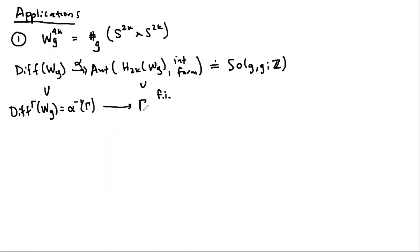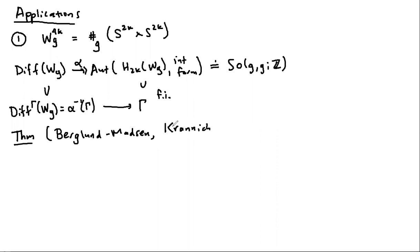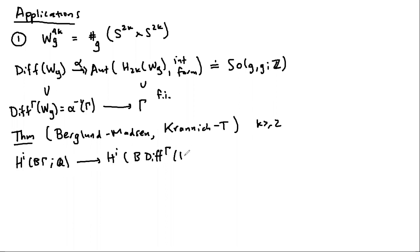You might ask if the cohomology of gamma pulls back to something non-trivial in the diffeomorphism group, which would give characteristic classes for bundles with fiber this manifold. Indeed this is the case. A theorem basically due to Berglund and Madsen — with a bit more worked out with Manuel Krannich — states that if k is at least two, the induced map on cohomology of classifying spaces with rational coefficients is injective for i at most 2k.